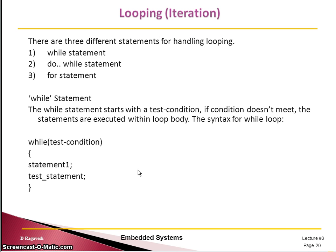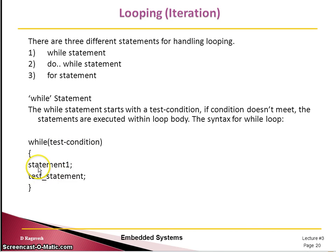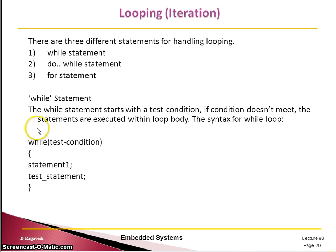The next essential statement, as mentioned, is iteration. We have different looping statements: while, do-while, and for. In a while loop, the condition is tested first; if true, the statement is executed. The while loop typically uses curly brackets since you need to alter the test condition inside. You also need to initialize the condition before the while loop, then test it, then alter it within the loop.